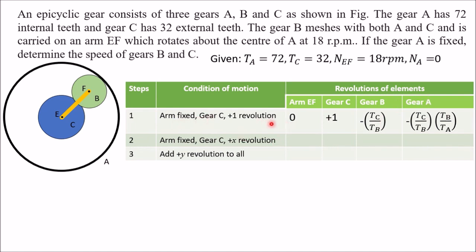In the first row, the arm is fixed so its speed is 0. Gear C is given plus 1 revolution. Speed of gear B equals speed of gear C multiplied by Tc divided by Tb, giving Tc/Tb. Speed of gear A equals speed of gear B multiplied by Tb divided by Ta.